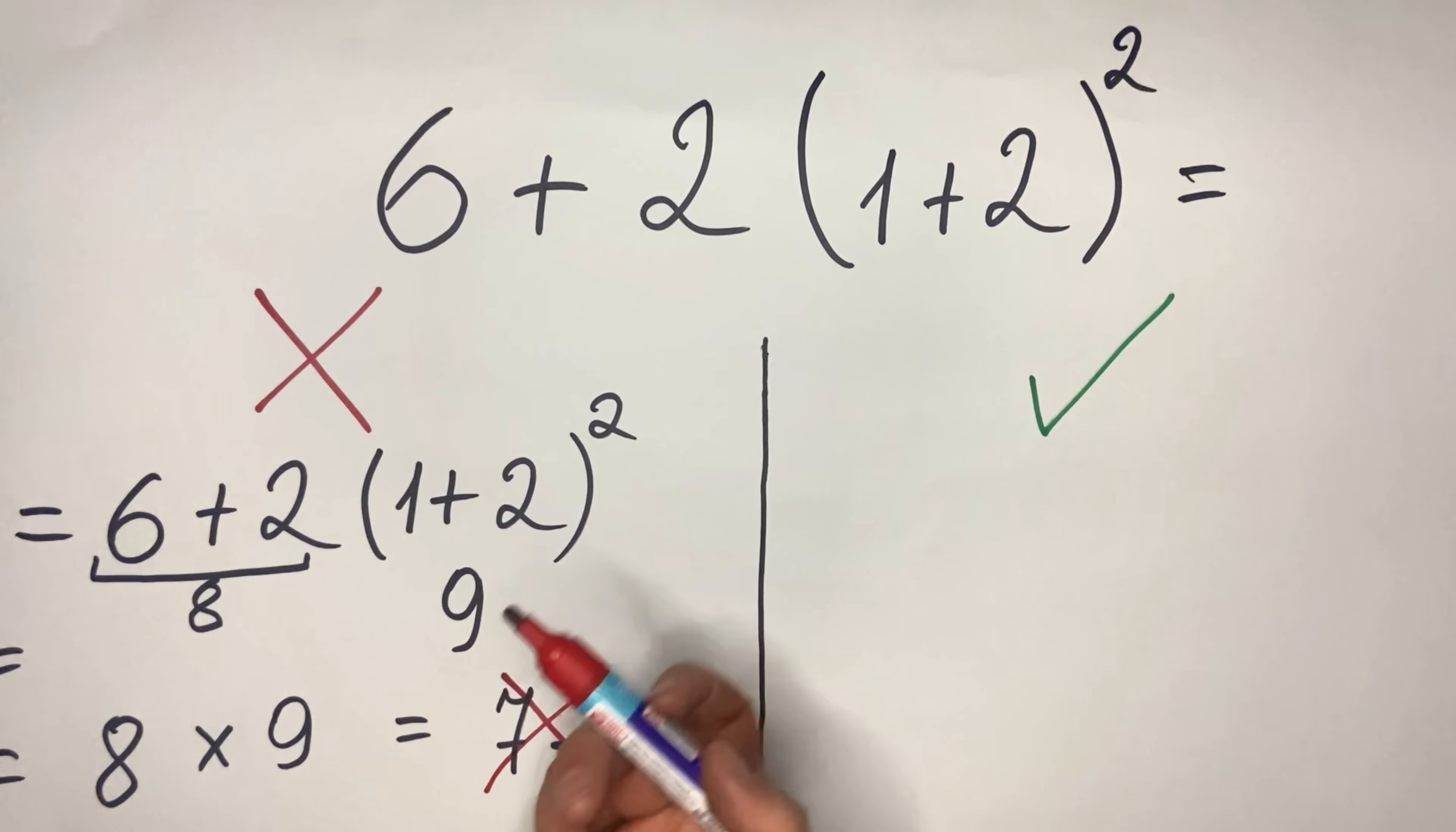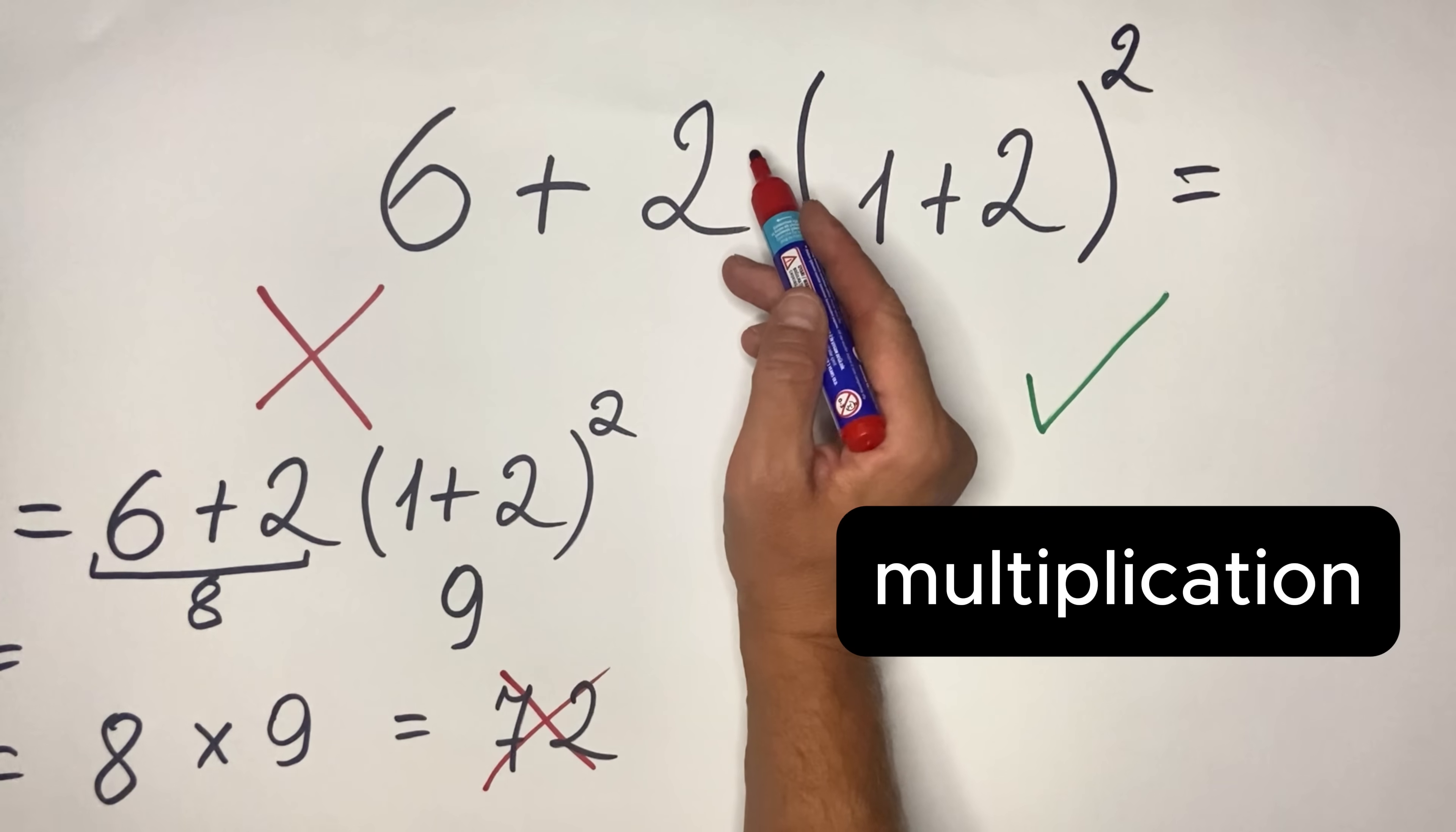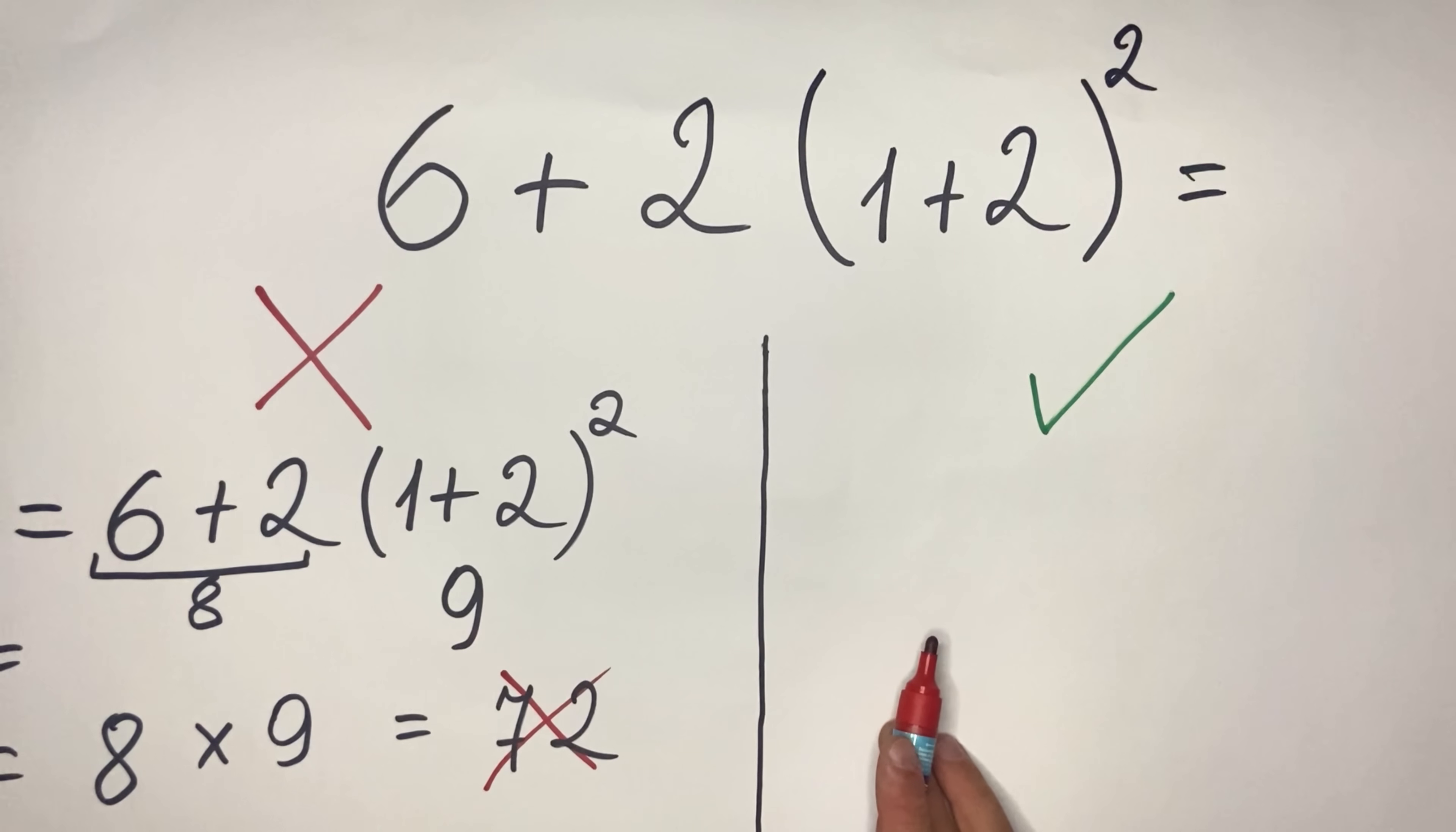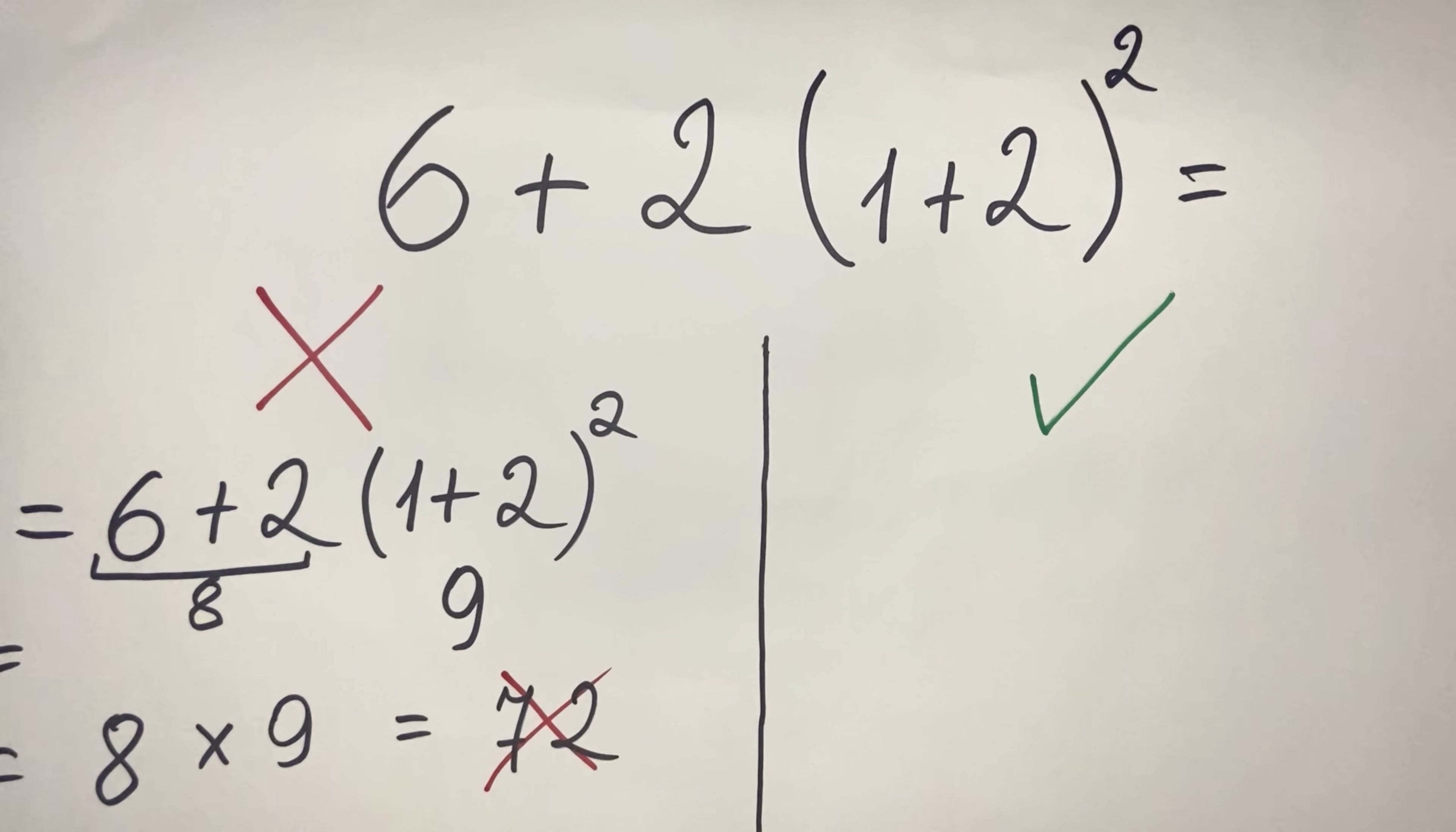Why? Because you have the PEMDAS rule, which stands for Parentheses, then Exponents, then Multiplication or Division, and then Addition or Subtraction. So in this case, the correct approach would be: first do the parentheses, then the square, then multiply, and then do the addition. So the result would be as follows: